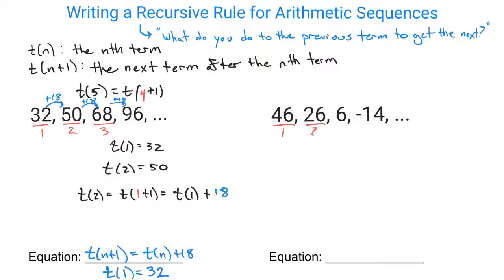So to quickly do the second example, 46 is the first term, 26 is the second, so on and so forth. We take a look at what we're doing each time and it looks like in this scenario we are subtracting 20 every single time to go from one term to the next. So to find t(4), for example, we would be doing t(3) and then that 3 would be plus 1. That's what t(4) is equal to.